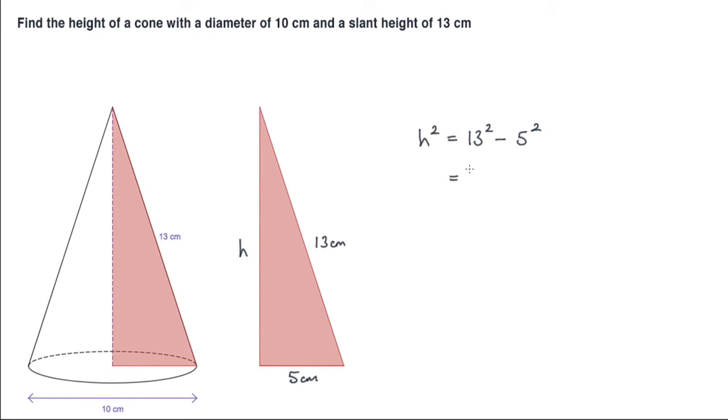13 squared is 169, 5 squared is 25. That gives us 144. So h will be the square root of 144, which is 12. So the height of the cone is 12 centimeters.